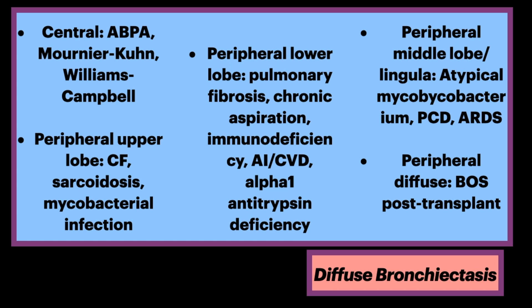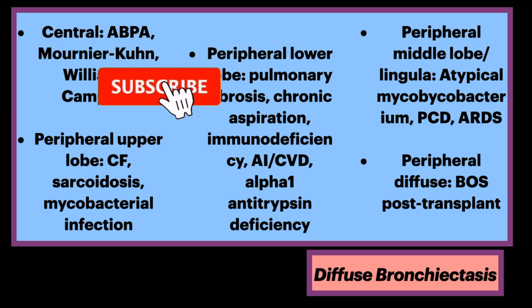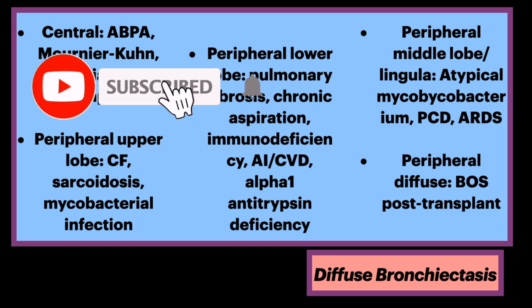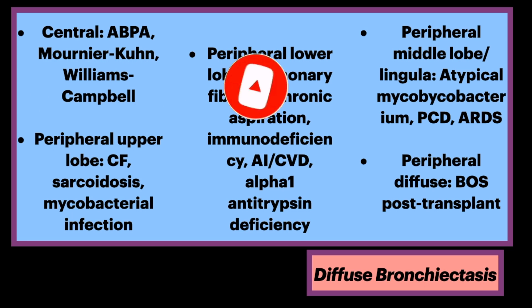For peripheral middle lobe diffuse bronchiectasis, think of atypical mycobacterial infections, PCD (primary ciliary dyskinesia), and ARDS (acute respiratory distress syndrome). And lastly, for peripheral diffuse-diffuse involvement, think of post-transplant BOS, bronchiolitis obliterans syndrome.